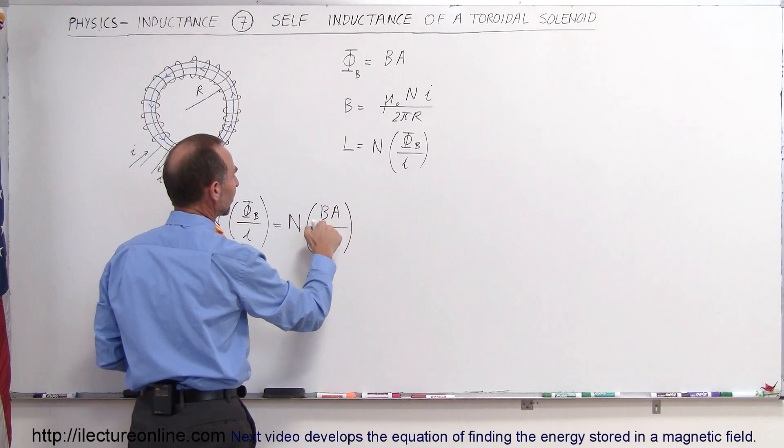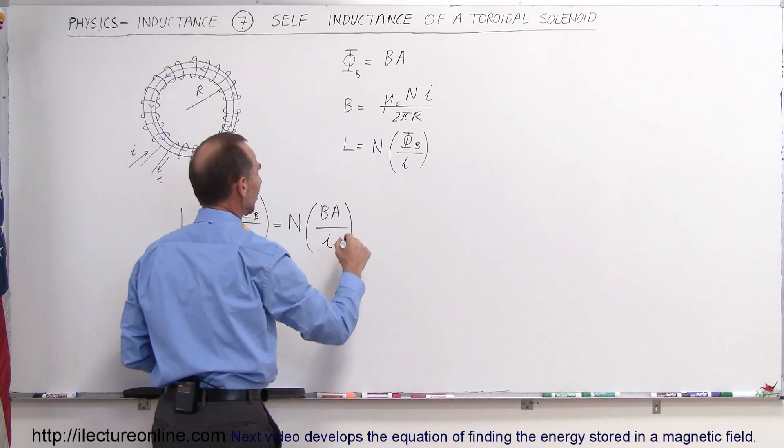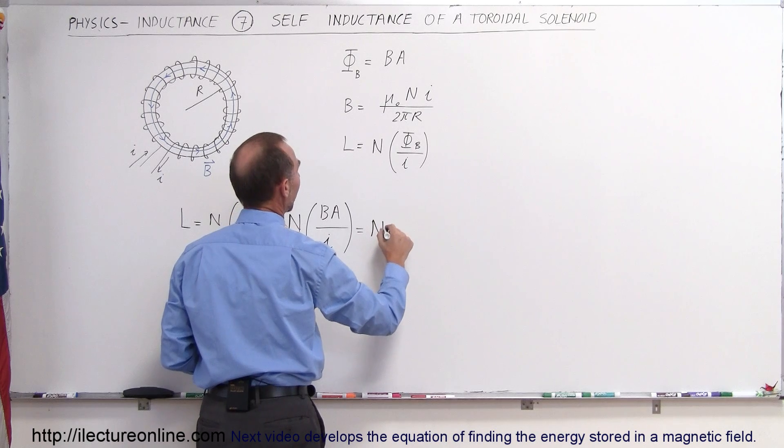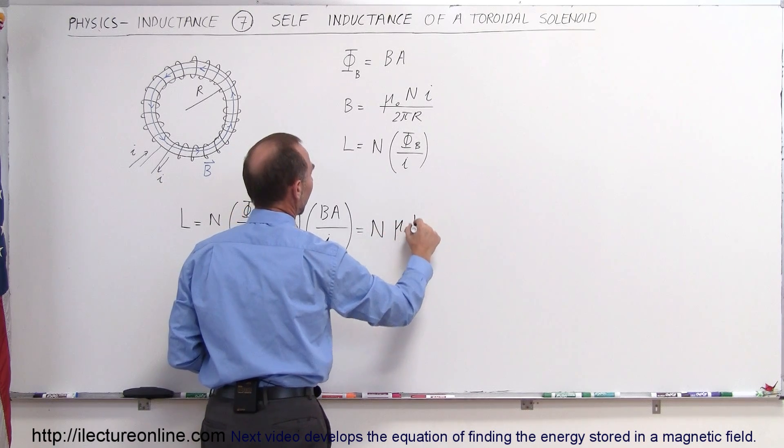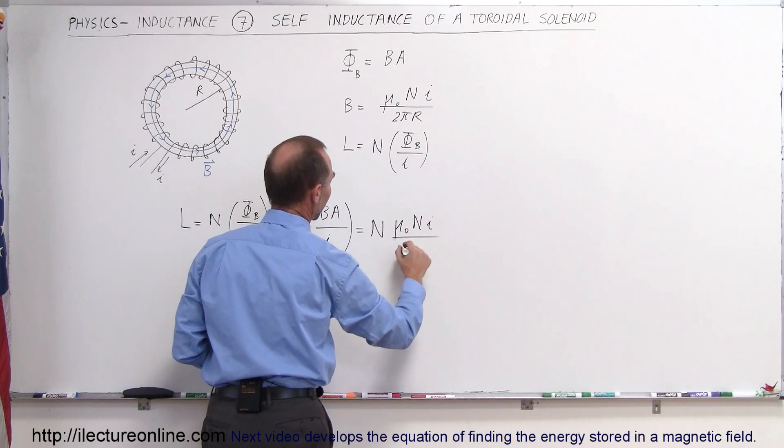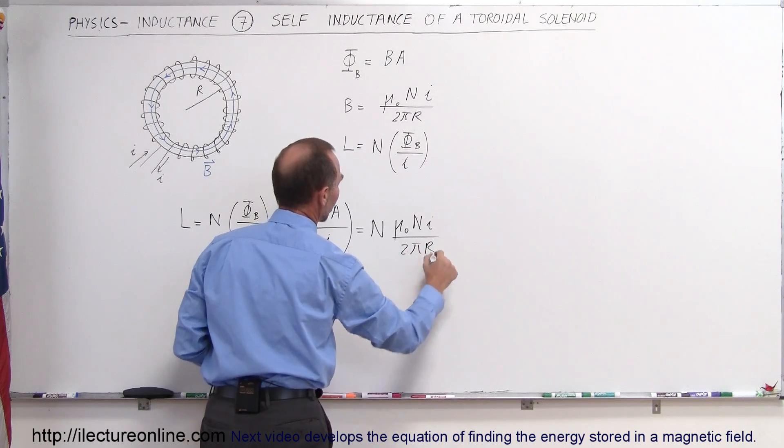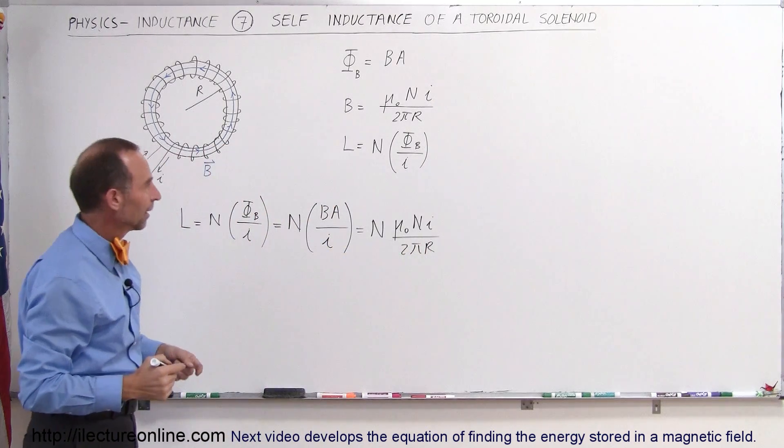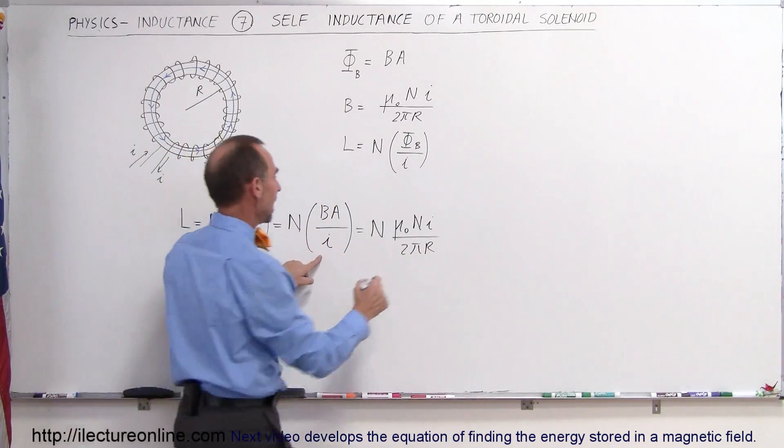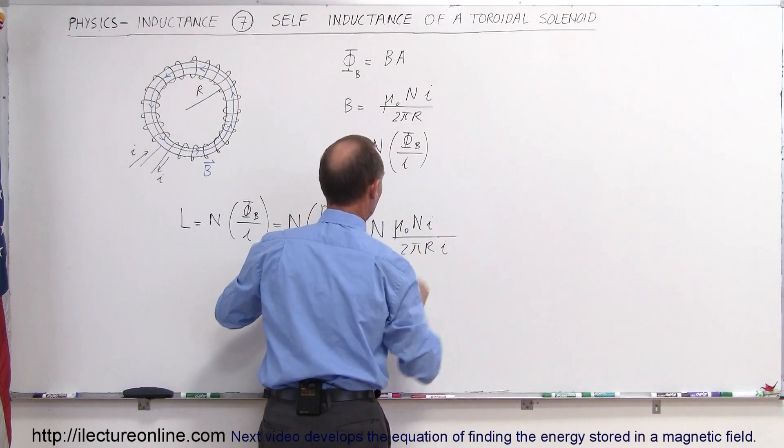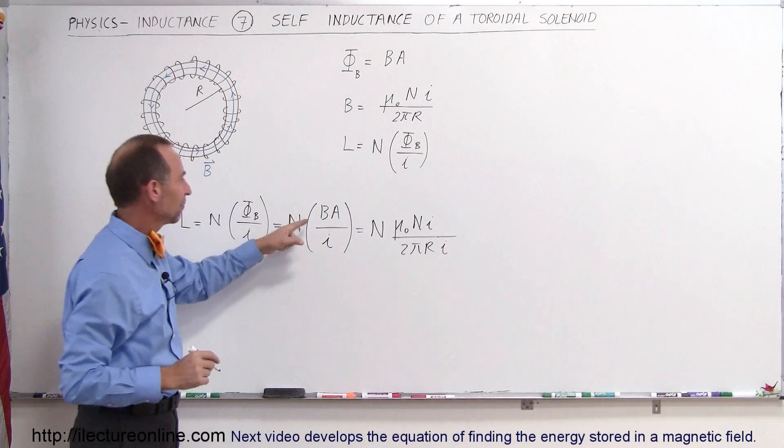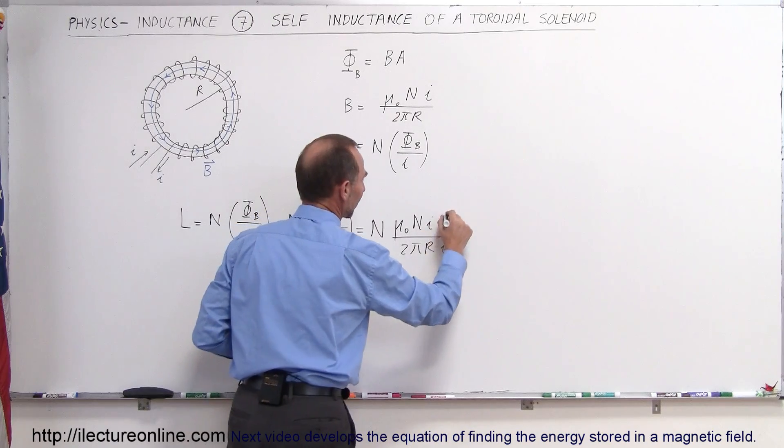And then we can write instead of B, we can write what B is equal to. So this becomes N times μ₀ N times the current divided by 2π, the radius. That is of course the circumference. And then we still have the I down here. Can't forget about that. We have B and we still need the A. Can't forget the A either.